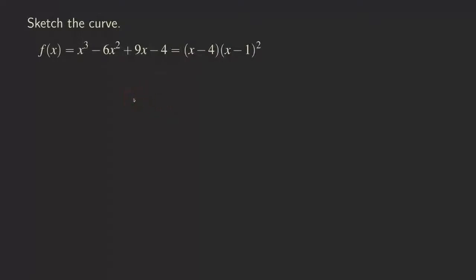First, we are going to find the domain. What we are doing is finding a list of things following the guideline in a typical calculus textbook like the James Stewart calculus textbook, where we find intervals of increase and decrease, local max, local min, inflection points, and asymptotes. We use all that information to help us graph the function.